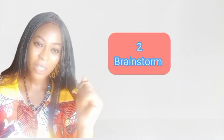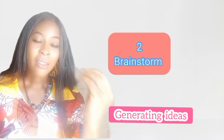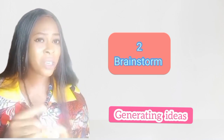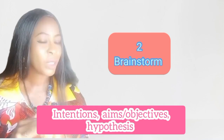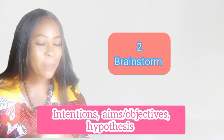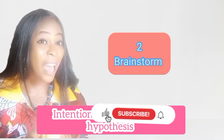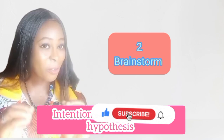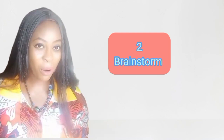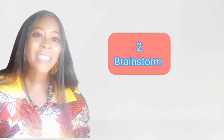Number two: brainstorm. Brainstorming means generating ideas — you have to start thinking. While you're brainstorming, you are asking yourself questions such as: What do I have to write? What are my aims? What are my hypotheses? What are my objectives? Aims and objectives are the same. You have to streamline your thoughts and feel free to jot them down. If possible, look into the mirror, freestyle, and ask yourself questions related to your research topic, then start answering them.